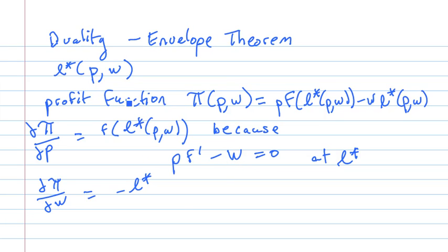And so these results, these are called the envelope theorem results, mean you can recover the output and the labor demand from the profit function and you can recover the comparative statics by the second derivatives of the profit function.